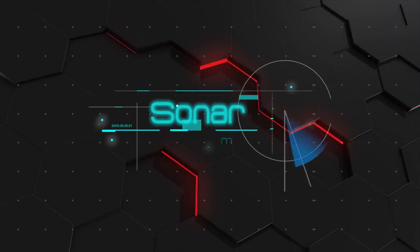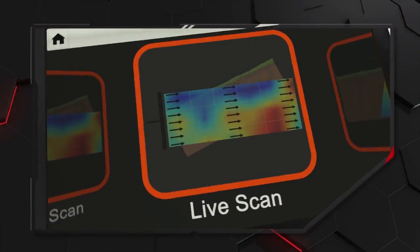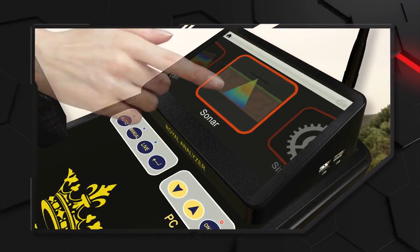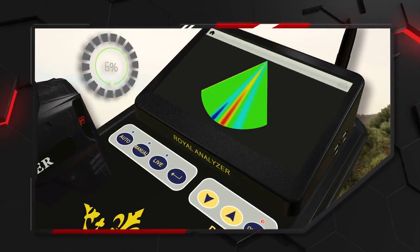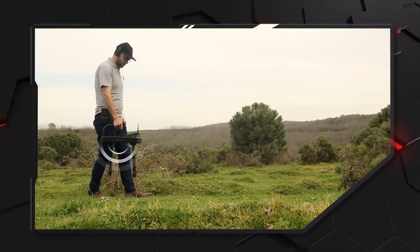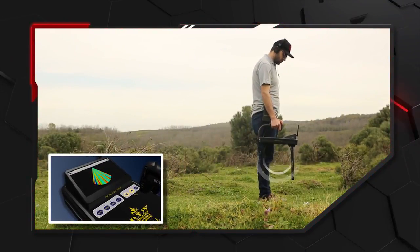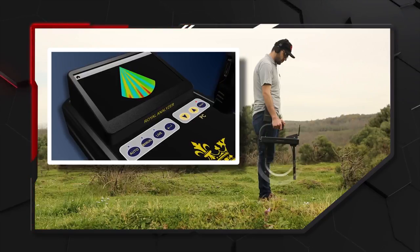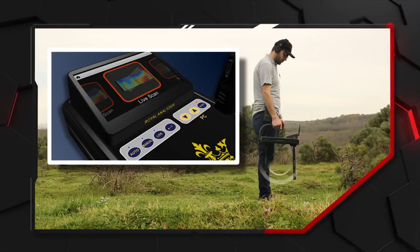Live Scan Program by Sonar Technique: The searching steps in this program are the same as Live Scan steps — select the program from the screen, press the Live Scan button on the device panel, perform ground balance, then start searching. What distinguishes this program is that when a target appears on the screen, you can preview the image directly by pressing the Back button on the device panel. To exit the program, touch the Back button on the screen.